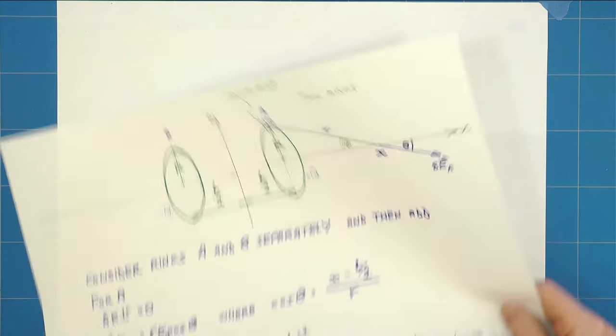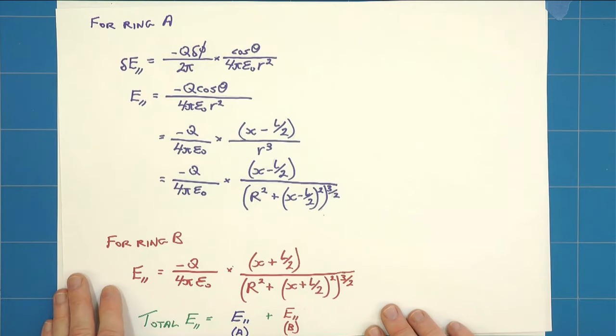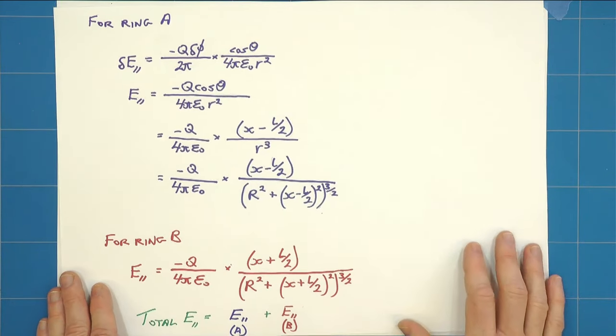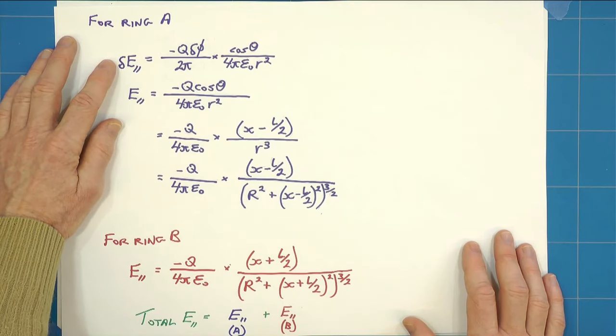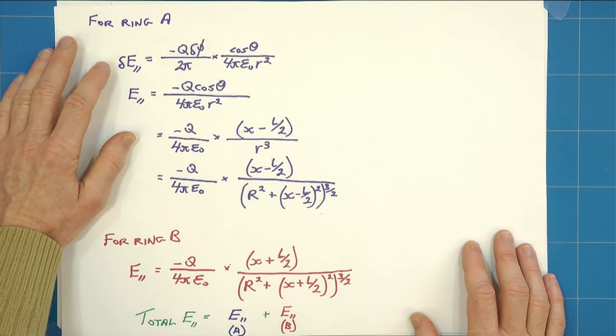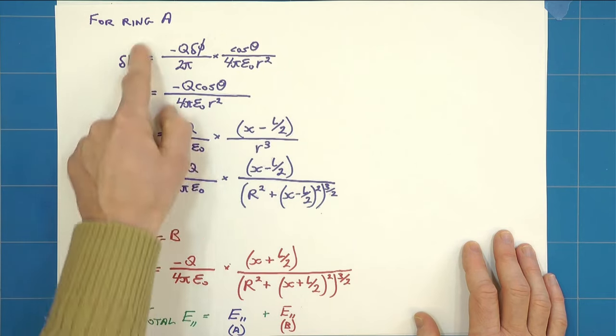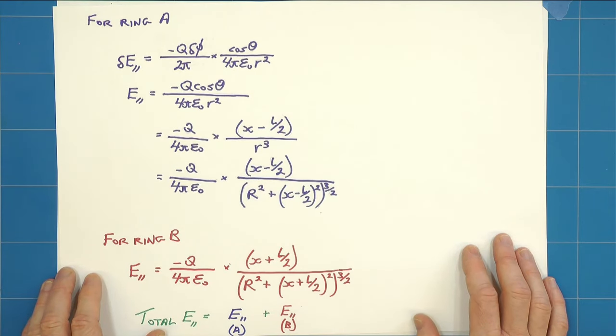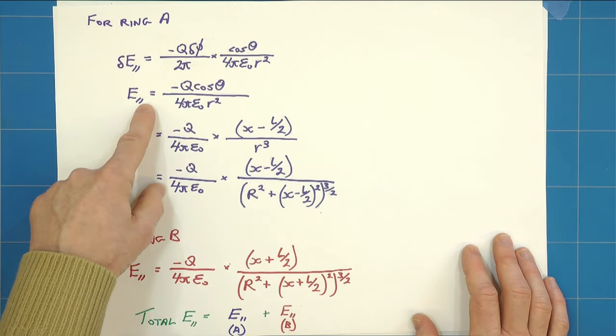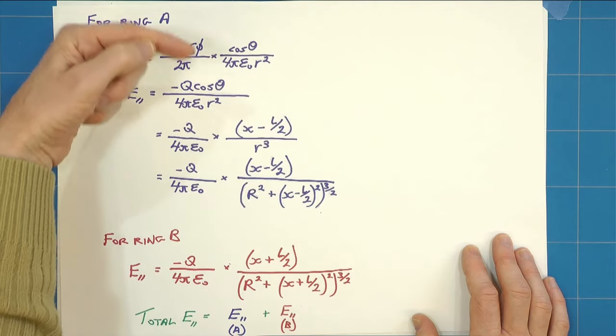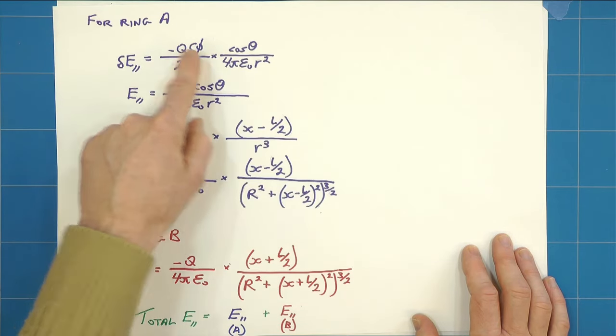So for ring A we basically substitute in for cos theta and little r squared. We know that delta E parallel is going to be this here, which then when we do the integral around the ring, this delta phi becomes 2 pi, so it cancels with that 2 pi, gives us this.